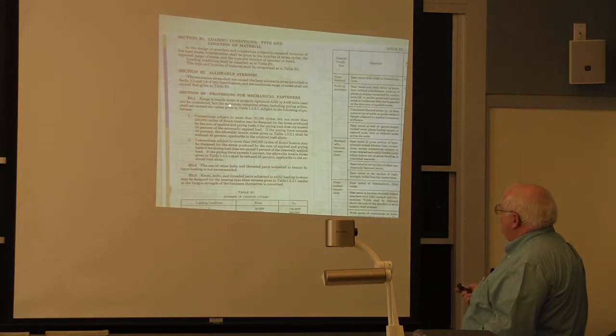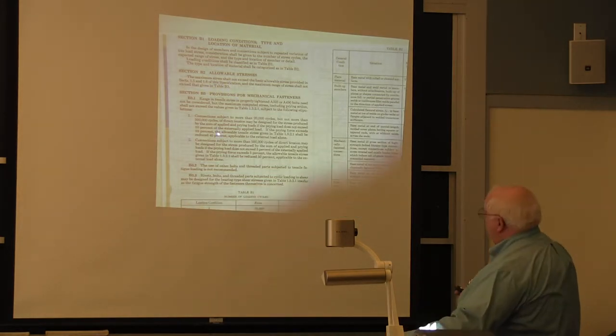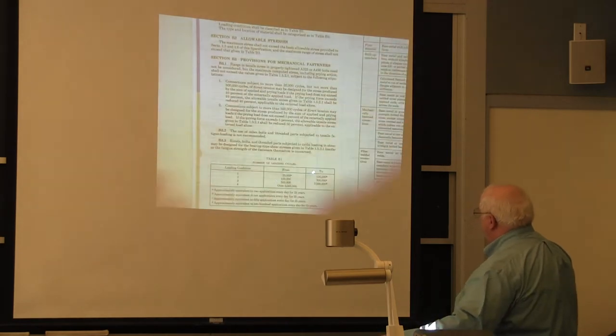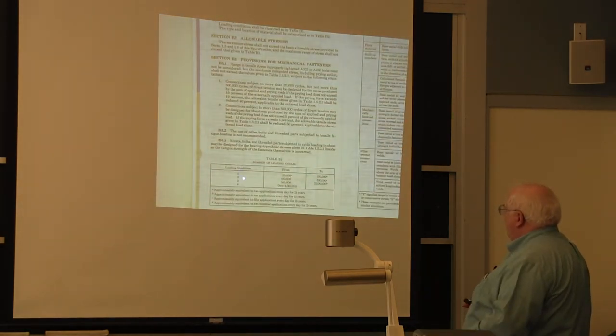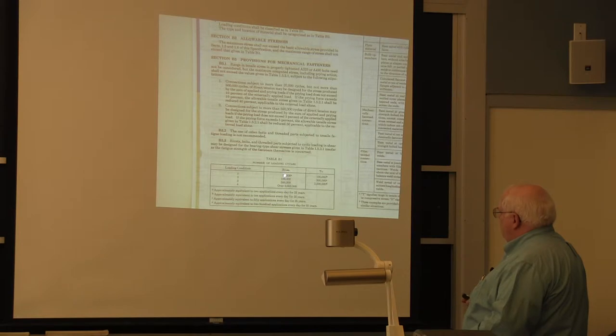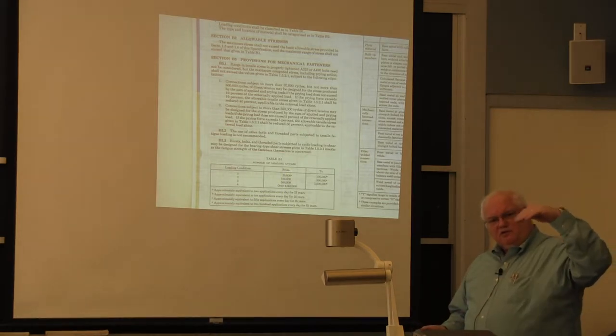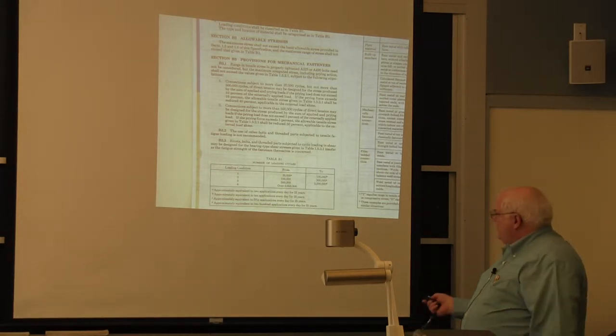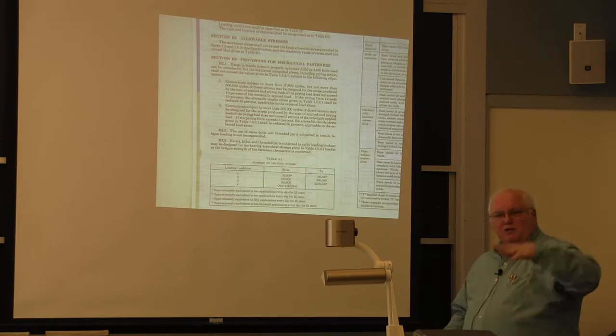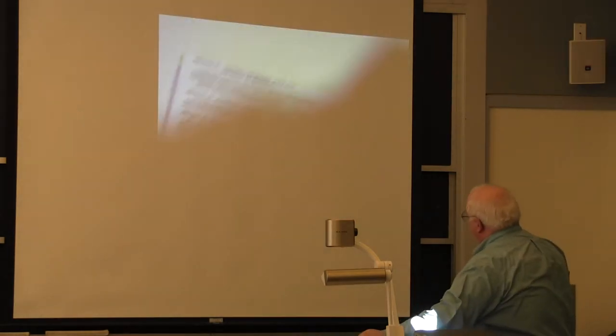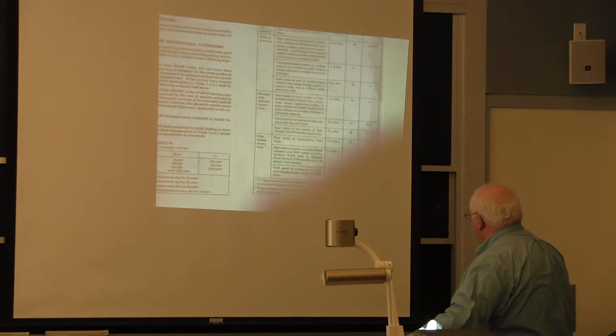And it will tell you what stresses you're allowed as a percentage of the base metal strength. And then the weld safety factors. And they have loading conditions, depending on the number of cycles. Because, you know, the fatigue curve goes down with the number of cycles. So basically, the loading condition is where are you on the fatigue curve? That's the way the civil engineers do it. And then they go and they say,